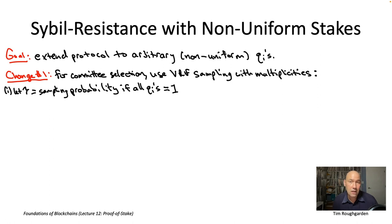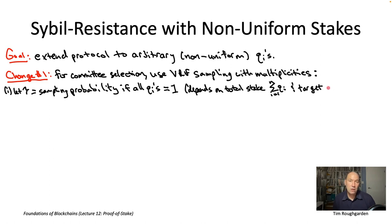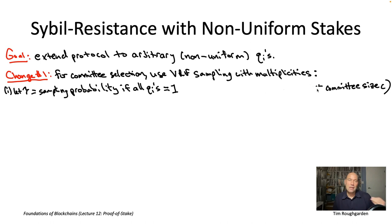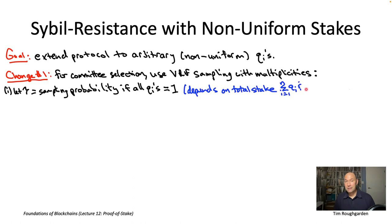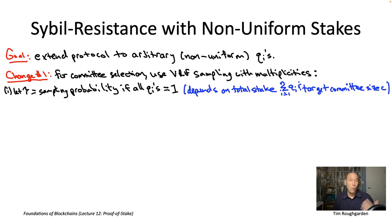Stake amounts are assumed to be integers, denominated in the smallest units of the native currency. The parameter tau is the same as tau sub c in the protocol description. For example, if you have 1,000 public keys each registered with a stake of one coin and you want committee sizes of 100, you'd expect tau to be about 10%. With 10,000 public keys and a desired committee size of 100, tau would be around 1%. So tau is chosen as a function of both the desired committee size and the total stake locked in the staking contract.